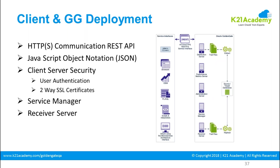Another component is Admin Client. In classic architecture you connect to Golden Gate using the GGSCI prompt. Admin Client does the same role in microservices architecture — it is the command-line interface for connecting to Golden Gate in this new architecture.